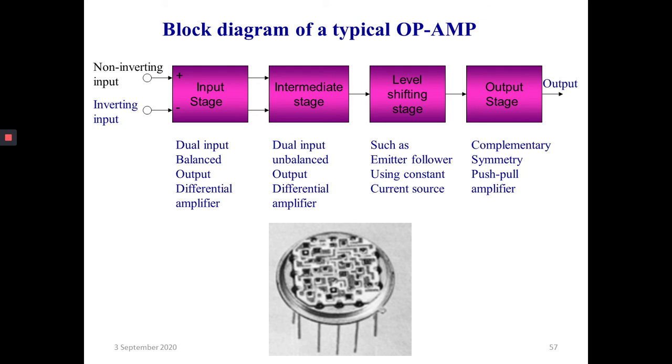It shifts the DC level back towards the zero ground level, making the DC present at the output of the intermediate stage return to its original reference point, that is to the ground level.